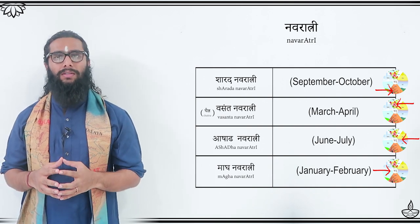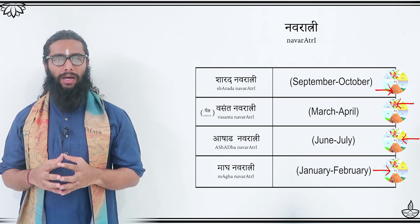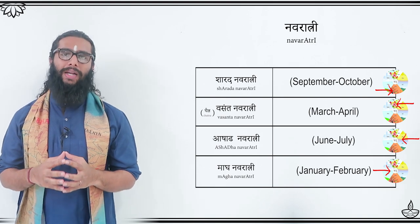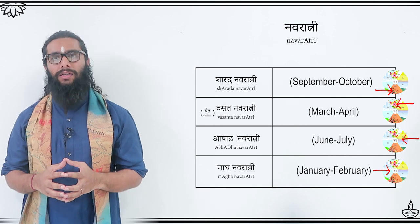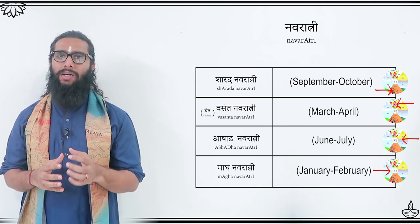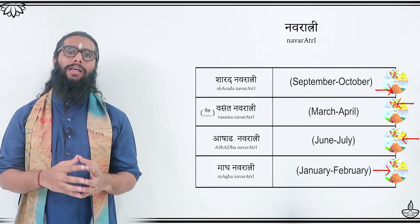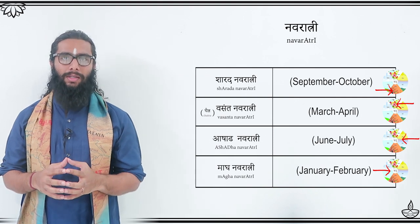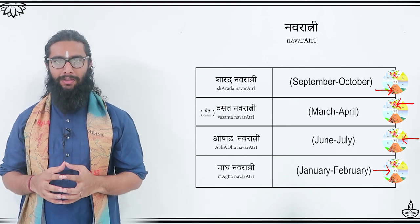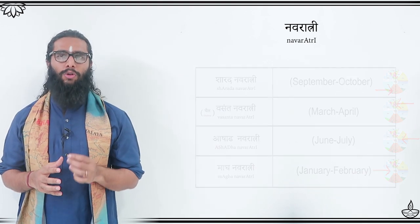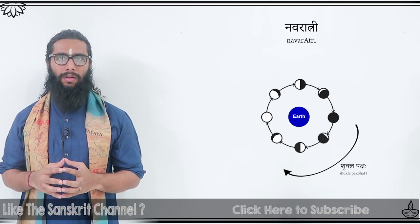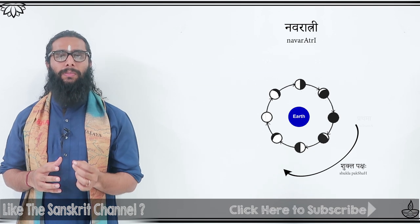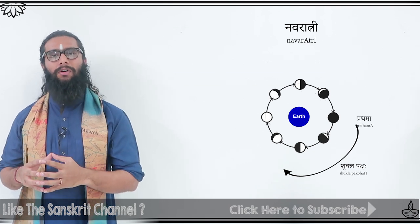While Sharada Navaratri celebrates the September equinox, after which the length of the nights start to become longer than the length of the day, Chaitra Navaratri celebrates the March equinox, after which the length of the days start to become longer than the length of the nights. All these 4 Navaratris also fall on the first 9 nights of the waxing phase of the moon, called Shukla Paksha, starting from Pratipada, or Prathama, until Navami.